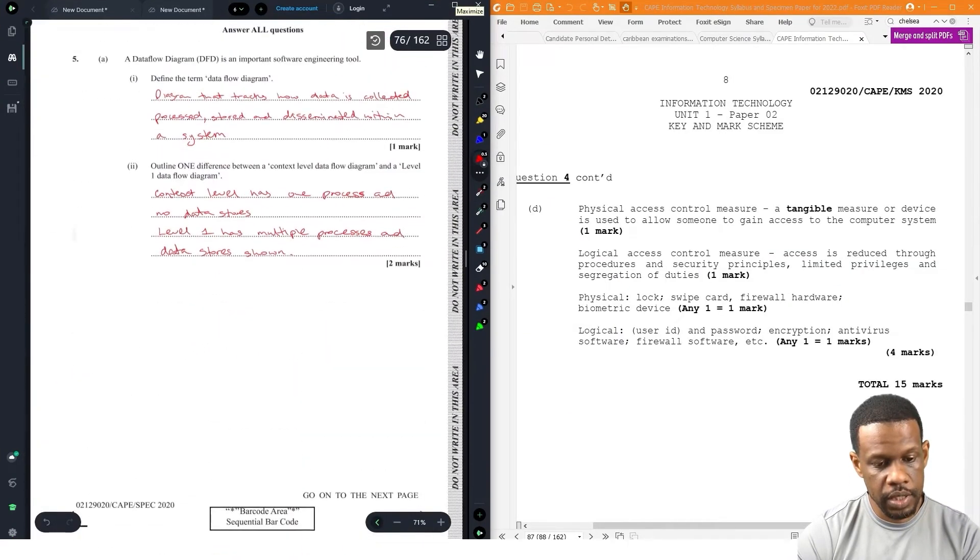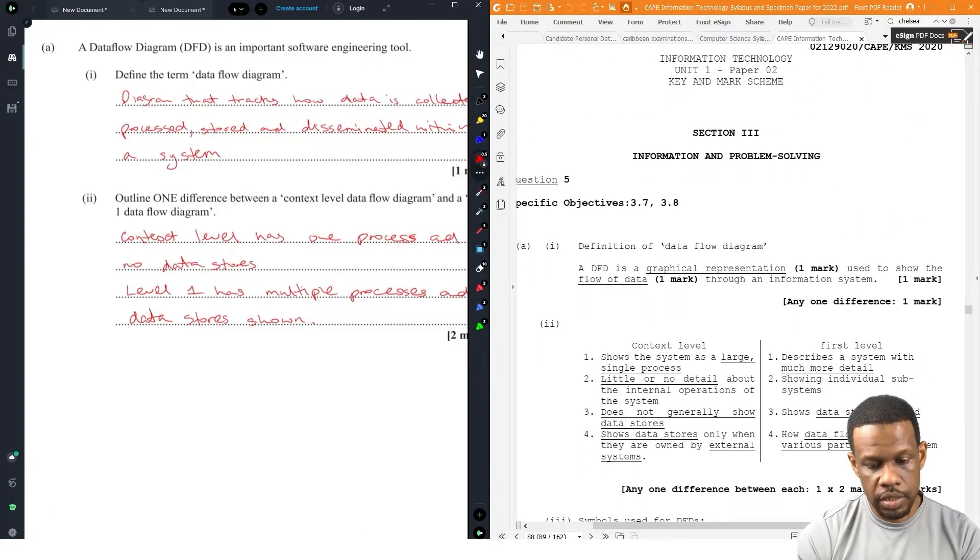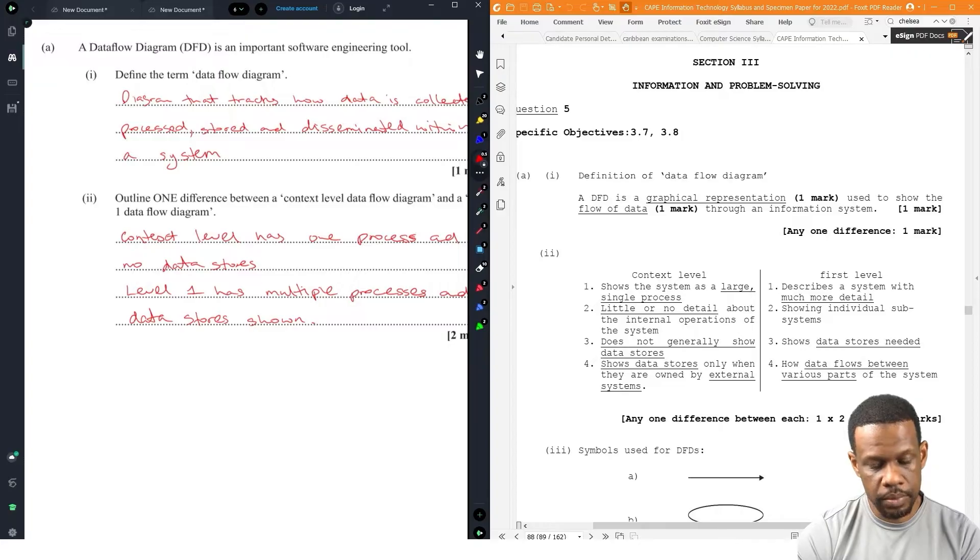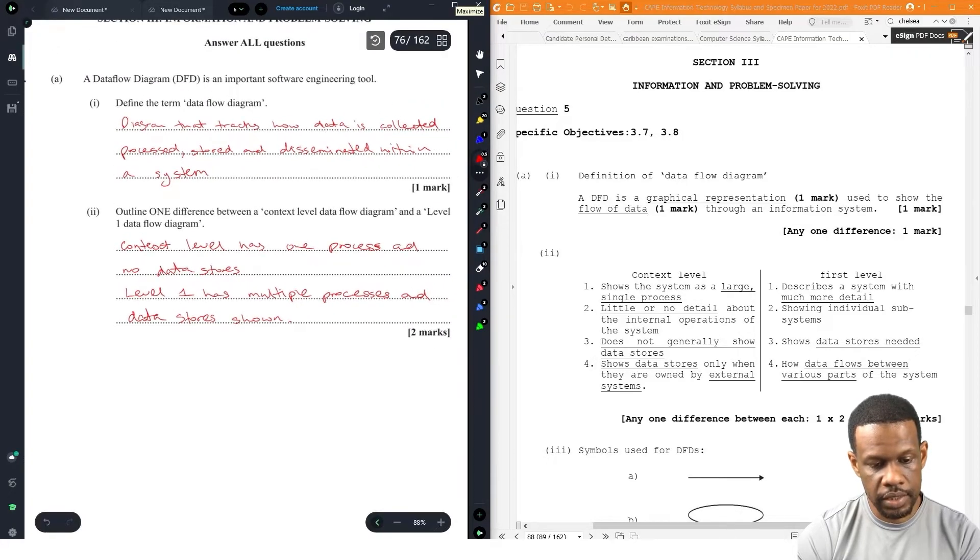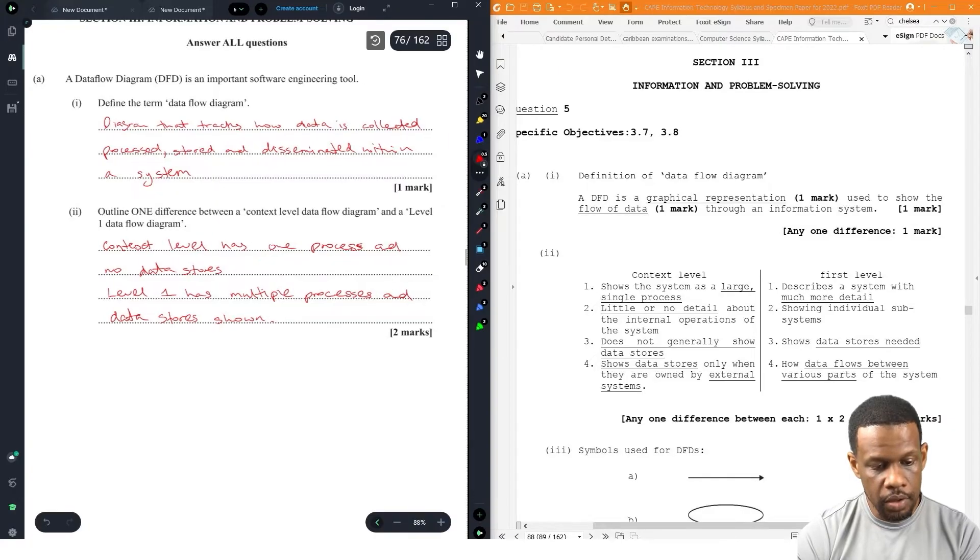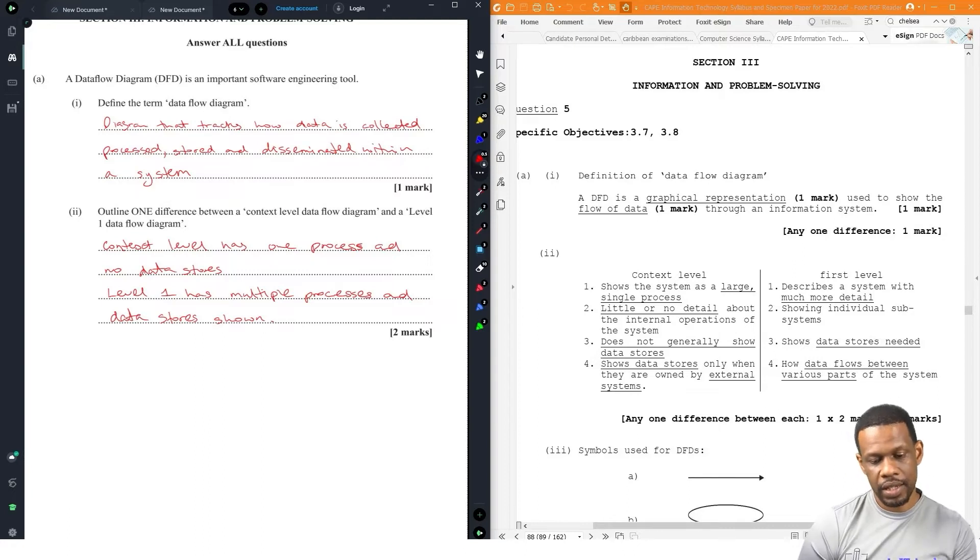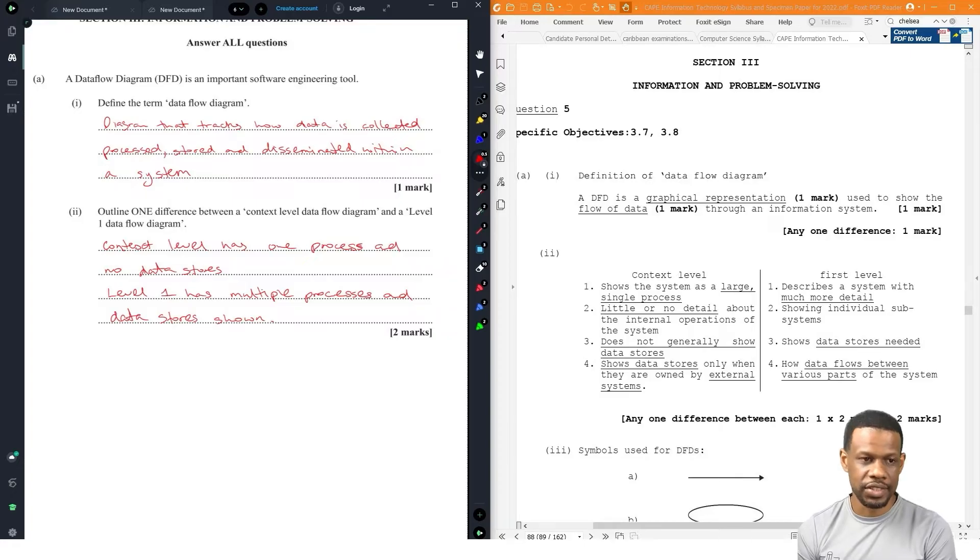From the specimen answers: define term data flow diagram - graphical representation to show the flow of data through an information system. My own is a little better. Outline one difference between a context level and level 1: context level shows one large single process, little to no detail about internal operations. Does not generally show data stores. You see what they put there? Does not generally show data stores. That's concerning.